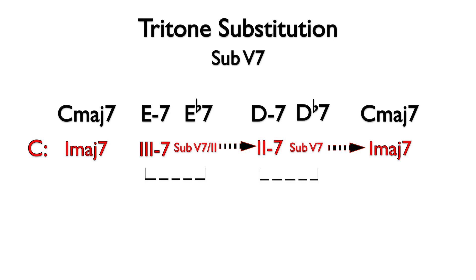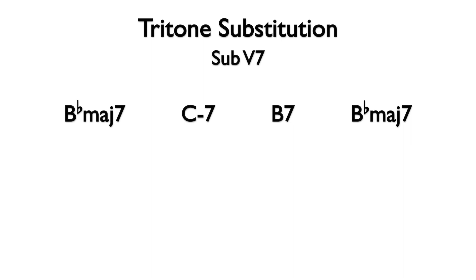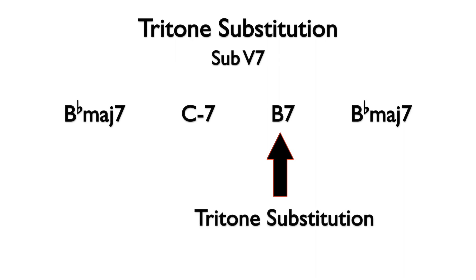To recognize a tritone substitution chord in a progression, look for a dominant seventh chord resolving down a half-step. In this progression, the B7 is a dominant seventh chord that resolves down a half-step to the Bb major 7. Therefore, it is functioning as a tritone substitution.